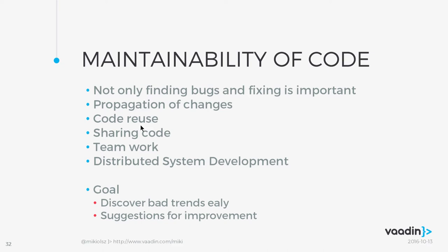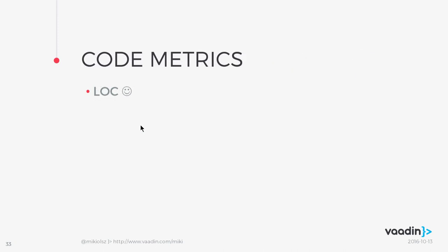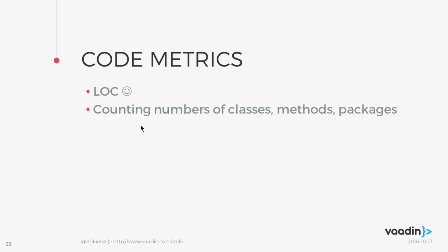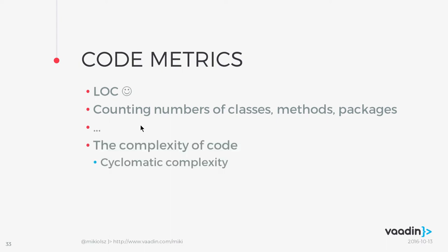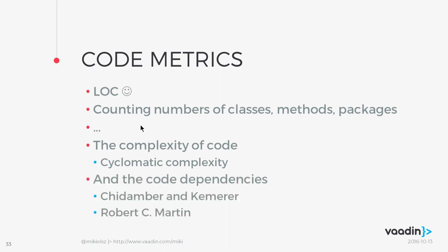The goal of using metrics is to discover bad trends early and give suggestions for improvement. A well-known metric is lines of code — it's not the most fortunate metric, but it's the first and most well-known. You can also count the number of classes, packages, methods, and libraries to get a rough idea of the size of your project.